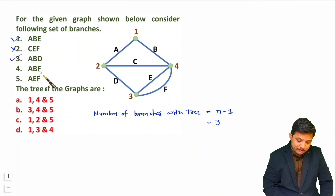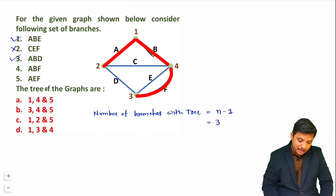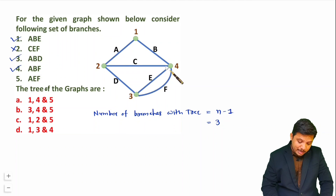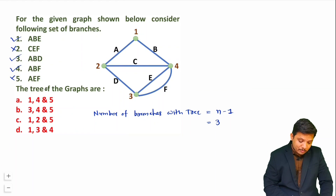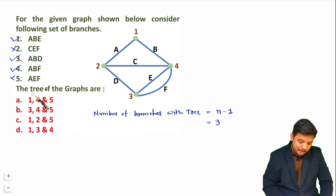Option 4 — A, B, F — covers all the nodes and does not form a loop, so this is also a tree. Option 5 — A, E, F — covers all the nodes but forms a closed loop, so this is not a tree. Therefore options 1, 3, and 4 are the trees of this graph.